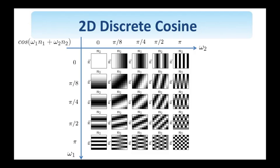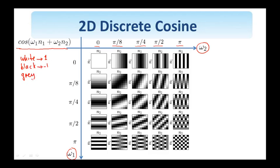Similarly, we show here the values of the two-dimensional cosine, cosine(omega 1 n1 + omega 2 n2), for various values of the frequencies omega 1 and omega 2 — considering the frequencies 0, pi over 8, pi over 4, pi over 2, and pi. Since pi is involved, the resulting cosine is periodic in the spatial domain. Instead of a 3D plot, we show this cosine as a two-dimensional grayscale image where white corresponds to the value 1, black to minus 1, and gray to 0. The axes have the orientation shown here, and each of these blocks is an 8 by 8 block.